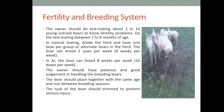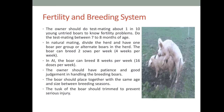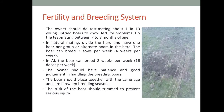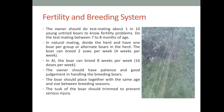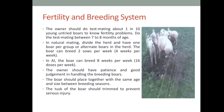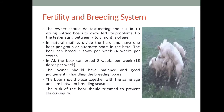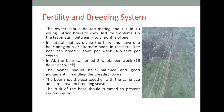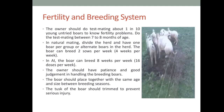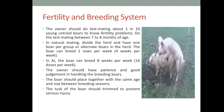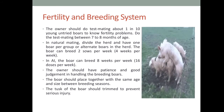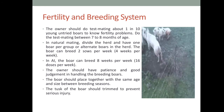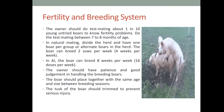For fertility and breeding, the owner should do test mating on 1 in 10 young boars to identify fertility problems. At the age of 7 to 8 months, test mate the boars to assess fertility. There are two types of mating: natural mating and artificial insemination. In artificial insemination, a boar can breed 8 sows per week, producing 16 doses over 2 weeks. In natural mating, he can breed 2 sows per week. The owner should have patience and good judgment in handling breeding boars. Boars placed together should be of the same age and size. The tusks of the boars should be trimmed to prevent serious injury.